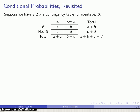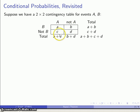This goes back to the idea of conditional probabilities. Let's suppose we have a 2 by 2 contingency table for our two events, A and B, where either A occurs or it doesn't and B occurs or it doesn't. We have the frequencies, the times that it has occurred, and we've extended our totals.